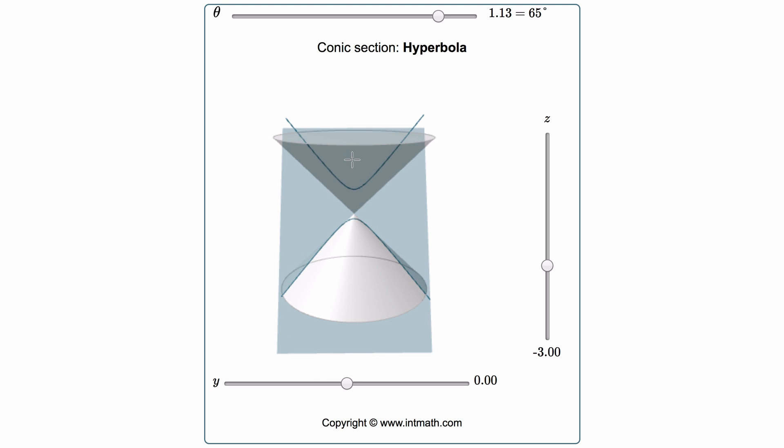So there are four different conic sections: the circle, the ellipse, the parabola, and the hyperbola. They all have very specific features that we're going to look at, but I just wanted you to be familiar with how they're formed and what their shape looks like.